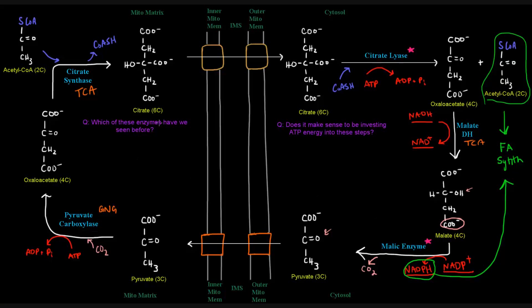So, that answers this question. Which of these enzymes have we seen before? This question here. Does it make sense to be investing ATP energy into these steps? So, I'm specifically referring to this step here and this step here. Well, what are we really trying to do here? We're trying to get these acetyl-CoAs from the mitochondrial matrix to the cytosol. For what purpose, though? Well, for the purpose of fatty acid synthesis.